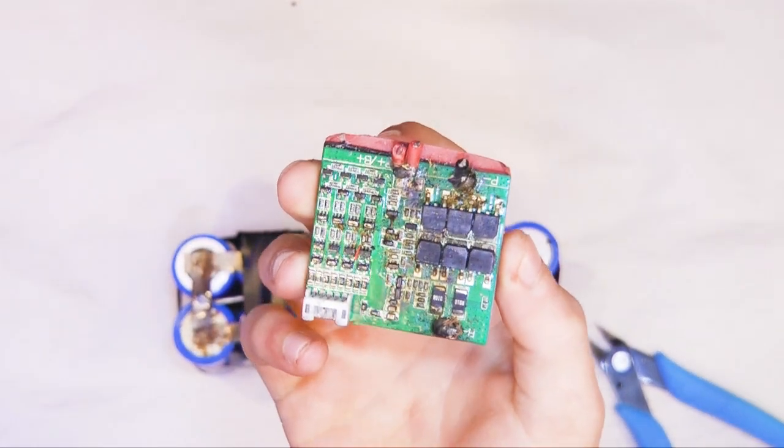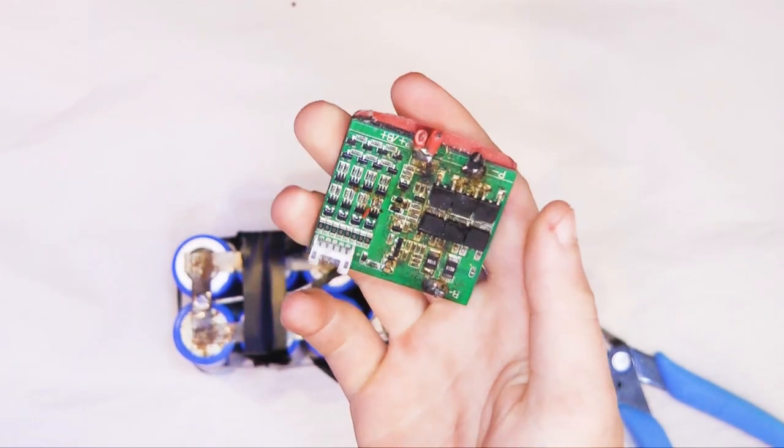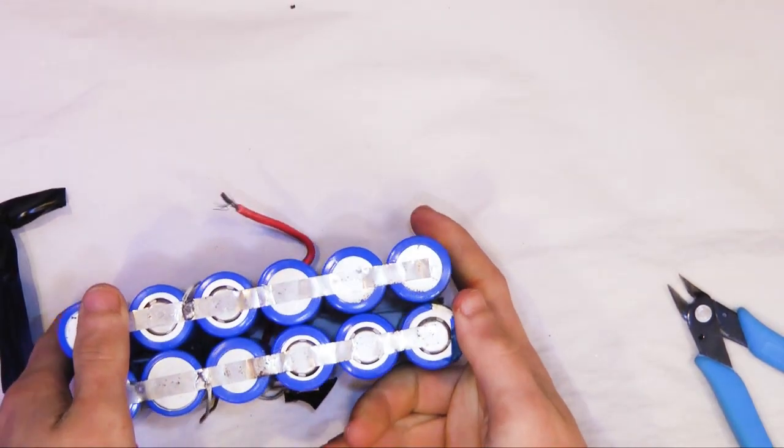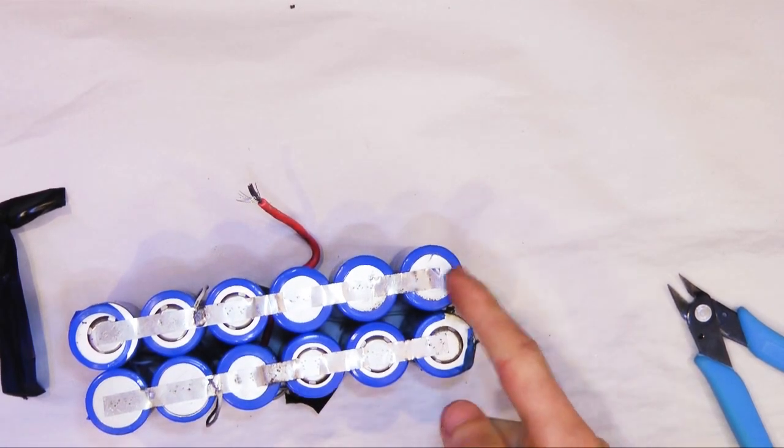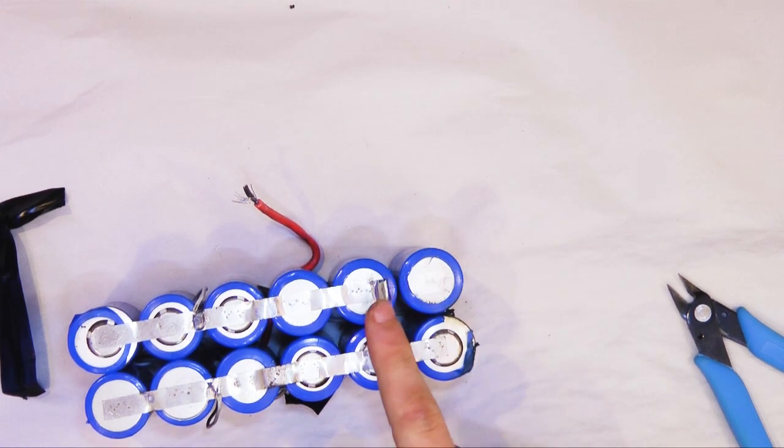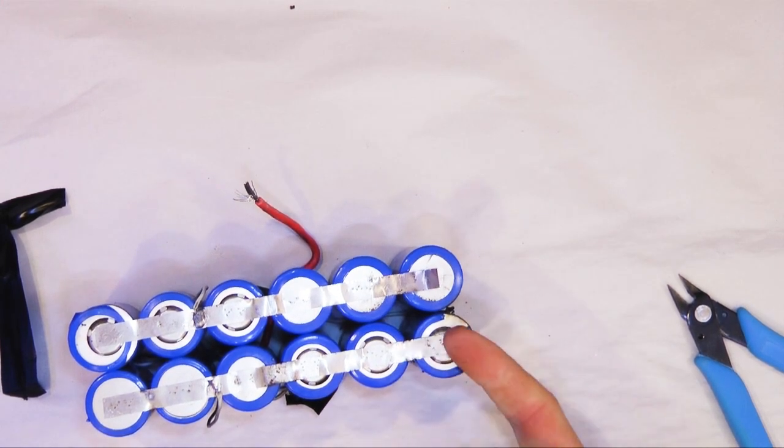Yeah, this thing just looks cooked. None of the MOSFETs look bad, but it just looks cooked. Next, we're going to fix these two cells that have their leads coming off. Right here and right here.